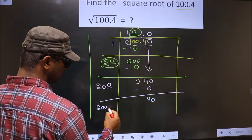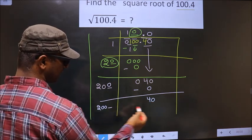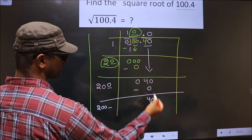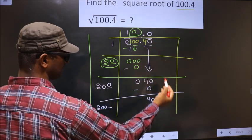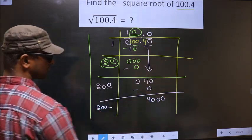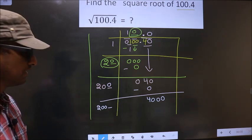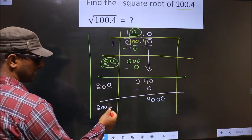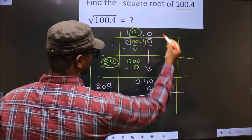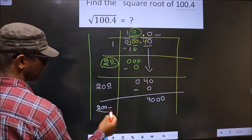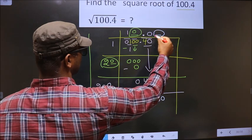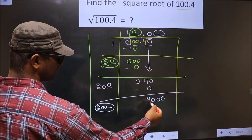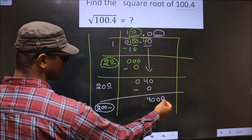Now here we should write a number. When I write a number here then this number is smaller than this. Here we did not bring any number down. We already have the decimal. So you can directly take two 0s. Now here I should write a number. Condition is whatever number I write here, here also I should write the same number and also when you multiply this number and this number, the resulting number has to be either equal to this or smaller than this but not larger than this.